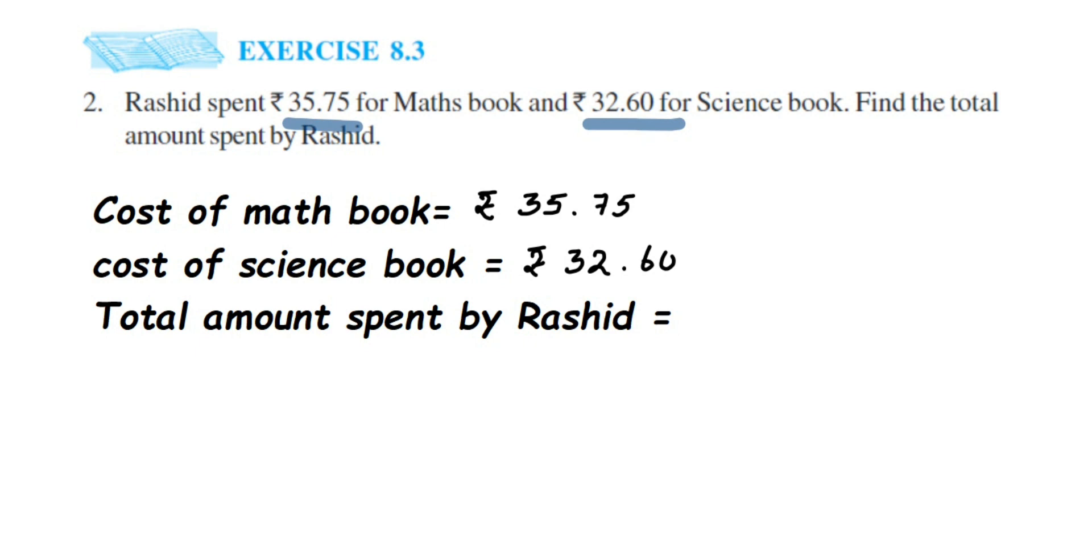So it will be rupees 35.75 plus rupees 32.60. Now we're going to add this amount. How to add this? We're adding two decimal numbers here, so we're going to use a lineup decimal method.